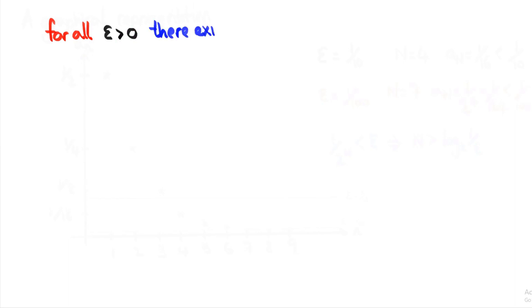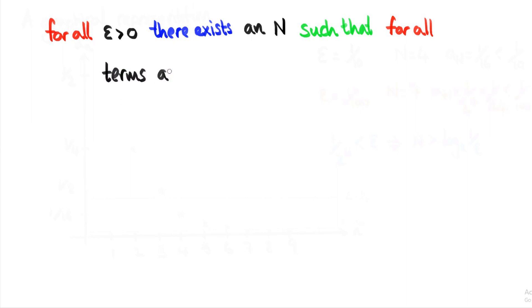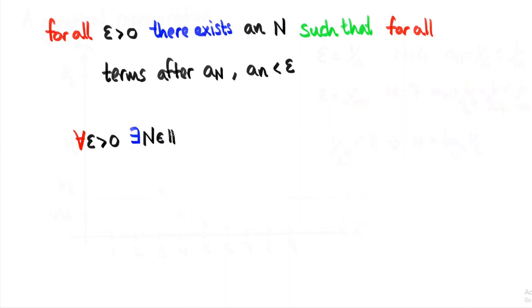Let's write this out in plain English. For all epsilon greater than zero — so any small epsilon your friend picks — there exists a point in the sequence called N such that for all terms beyond N, the value of the sequence is less than epsilon. Mathematicians write this more concisely: 'for all' becomes an upside-down A and 'there exists' becomes a backwards E. So: for all epsilon greater than zero, there exists an N which is in the natural numbers (meaning N is a whole number), such that for all little n greater than big N, aₙ is less than epsilon. This is a concise rulebook for the game we play to determine if a sequence converges to zero.